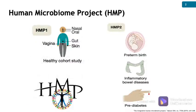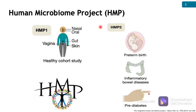The Human Microbiome Project is a 10-year program divided into two phases, HMP-1 and HMP-2. HMP-1 studied healthy individuals, focusing on characterization of microbial communities that live in and on our bodies. HMP-2 expanded the initial findings to three longitudinal cohort studies, including preterm births, inflammatory bowel diseases, and prediabetes.